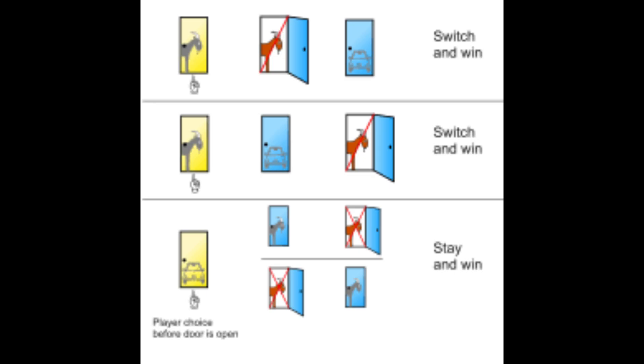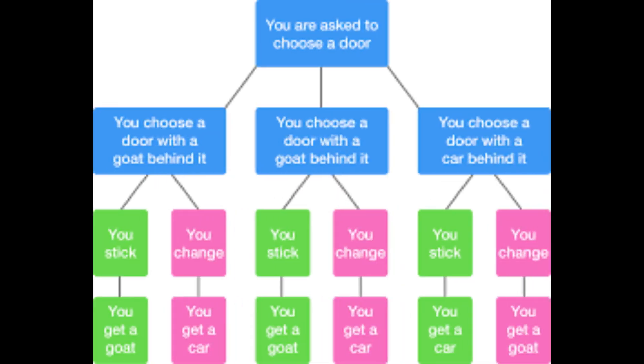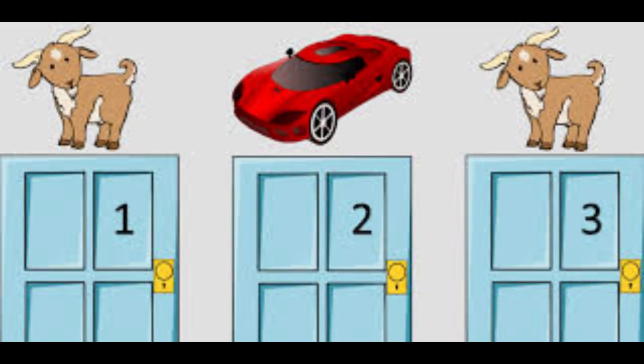The Monty Hall problem has become so famous that it's been referenced in books, movies, and TV shows. Perhaps most notably, it was popularized in the early 90s by columnist Marilyn Vos Savant, who explained the solution in her Ask Marilyn column.